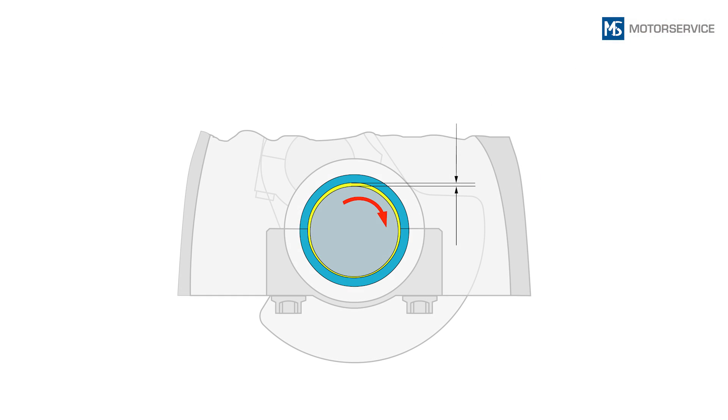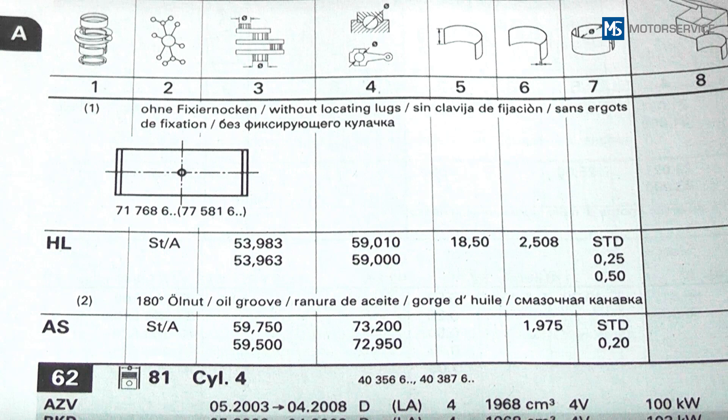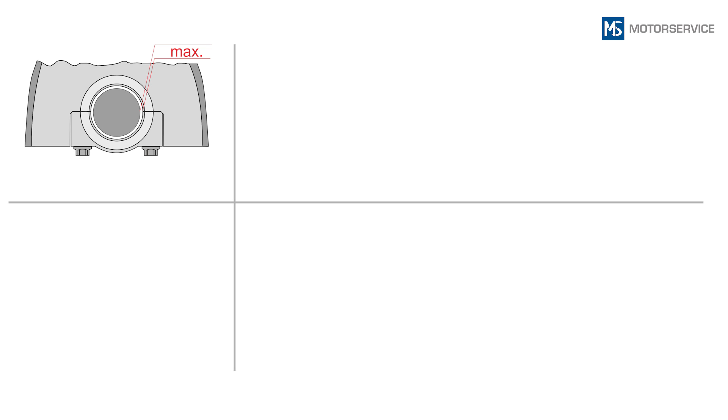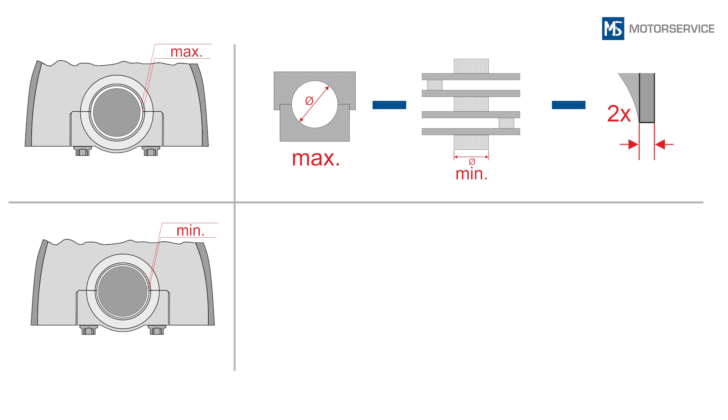As a guide value, bearing clearances are one two thousandth of the shaft diameter. However, it is recommended to always determine the exact values using the catalog data. To calculate the maximum clearance, subtract the minimum journal diameter and twice the thickness of the engine bearing shell from the maximum diameter of the housing bore. The minimum clearance is calculated through the minimum housing bore, the maximum journal diameter and twice the thickness of the engine bearing shell.